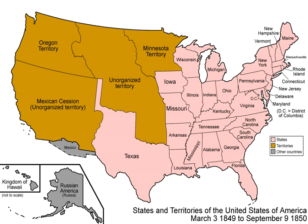El Paso, where Texas had established county government, was left in Texas. The slave trade was abolished in the District of Columbia but not the institution of slavery. The Fugitive Slave Act was strengthened, requiring compliance by law enforcement in free states and increasing penalties.